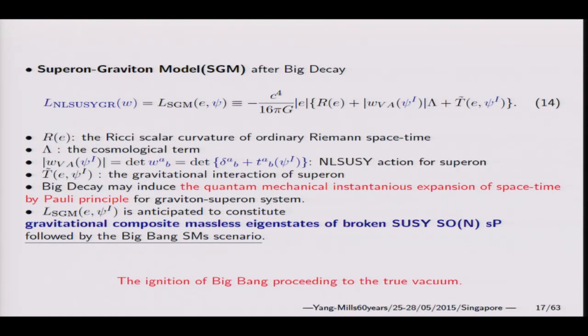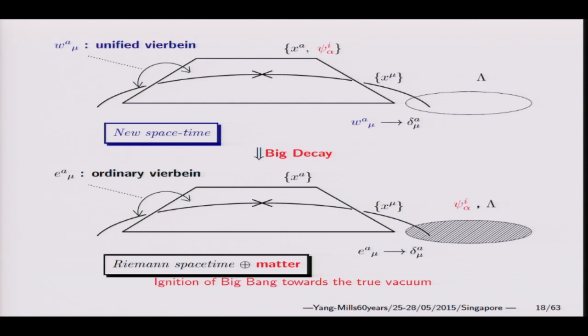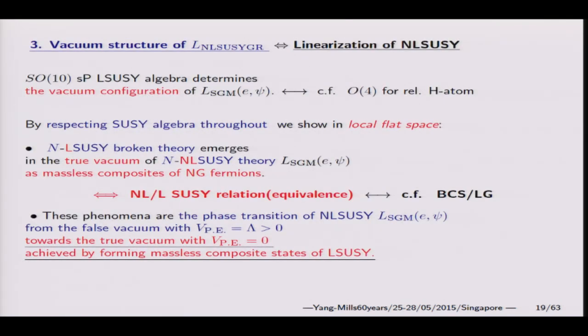What is the true vacuum of this very complicated action? I'll show you that true vacuum of this action is achieved when ordinary linear, familiar linear theory emerges from the vacuum. This is the sketch of the picture. This is the starting picture. I'll show you the SGM very complicated free-money action is equivalent to the linear theory action, which is very popular nowadays.